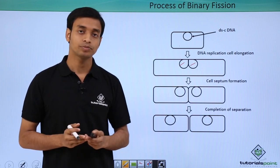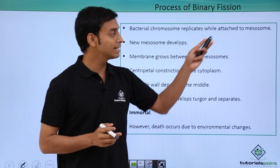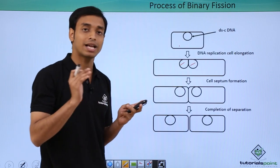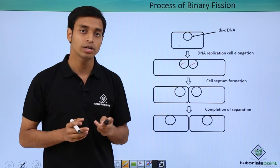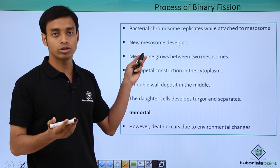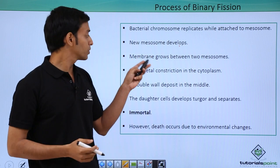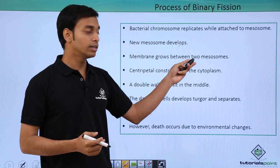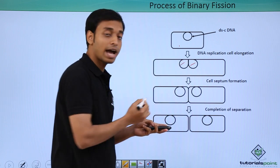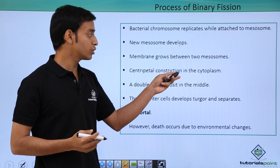Let's take a deeper look into this process. Bacterial chromosome replicates while it is attached to the mesosomes. Here we are seeing this bacterial cell is attached to the plasma membrane with the help of mesosomes. During this process, the replication takes place. After this, new mesosomes will also develop. Obviously, they're going to develop because the cells are also replicating. Membrane grows between these two mesosomes. We have discussed that a membrane will be formed, that is the septum formation will happen in between these two mesosomes.